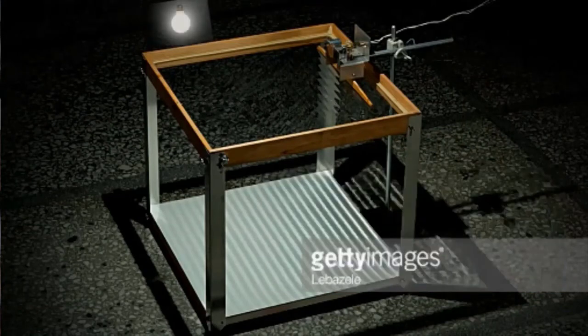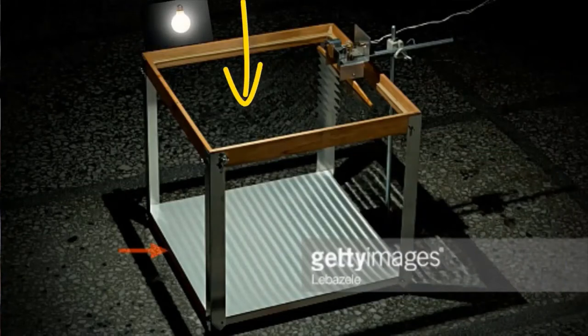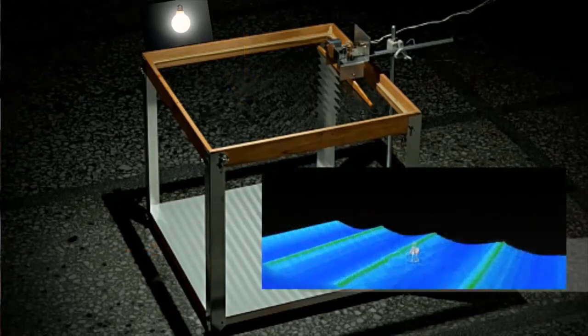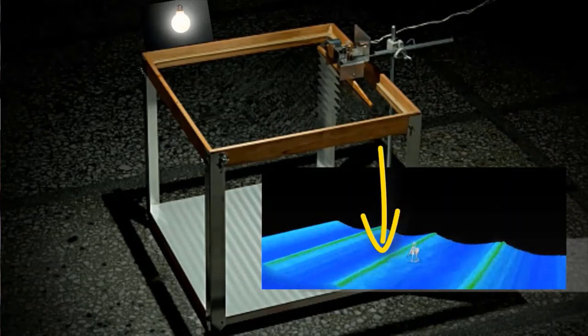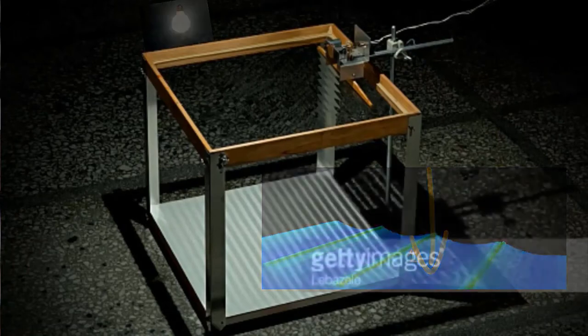The ripple tank is illuminated from above. The light passes through the water onto a white sheet of paper placed directly below the tank. Now the light is bent as it passes through the water. A crest of water bends the light away from the crest, while a trough focuses or concentrates the light. We'll discuss this later when we talk about light.